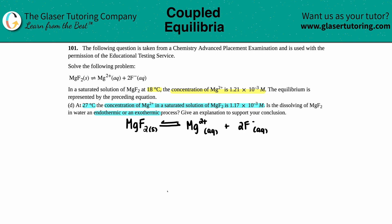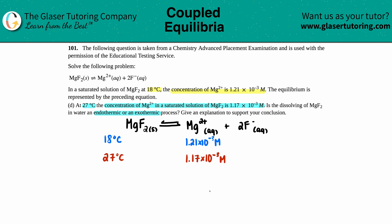Let's see what went on here. At 18 degrees Celsius — I'll put this in blue — the Mg²⁺ concentration was 1.21 times 10 to the negative third molarity. But then once we raise the temperature — we're increasing the temperature, 18 is lower than 27 — the concentration of Mg²⁺ is now 1.17 times 10 to the negative 3 molarity.